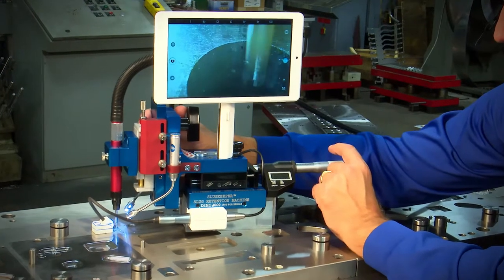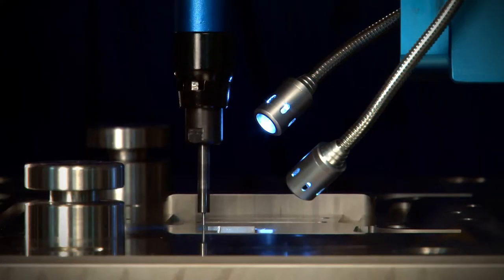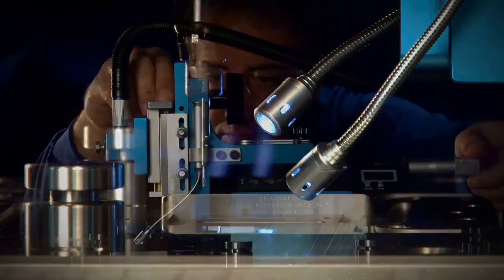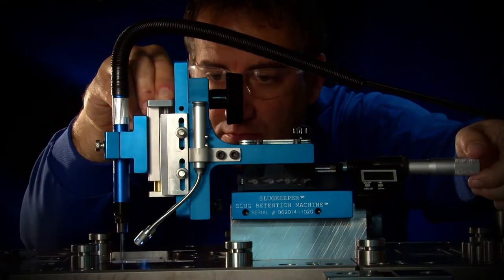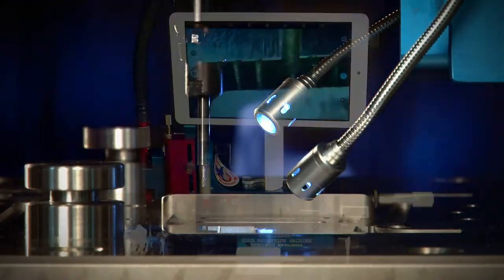The slug keeper can be used on dye blocks, dye inserts and dye bushings in the tool room, as well as on a dye while it's in the press. This results in even greater savings by eliminating the need to remove the dye from the press, disassemble it and return it back to the press.